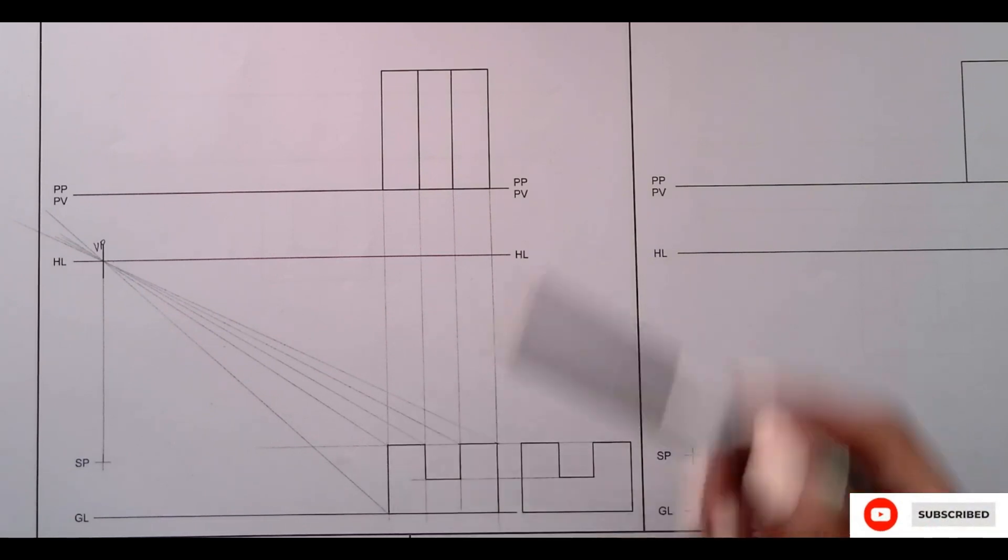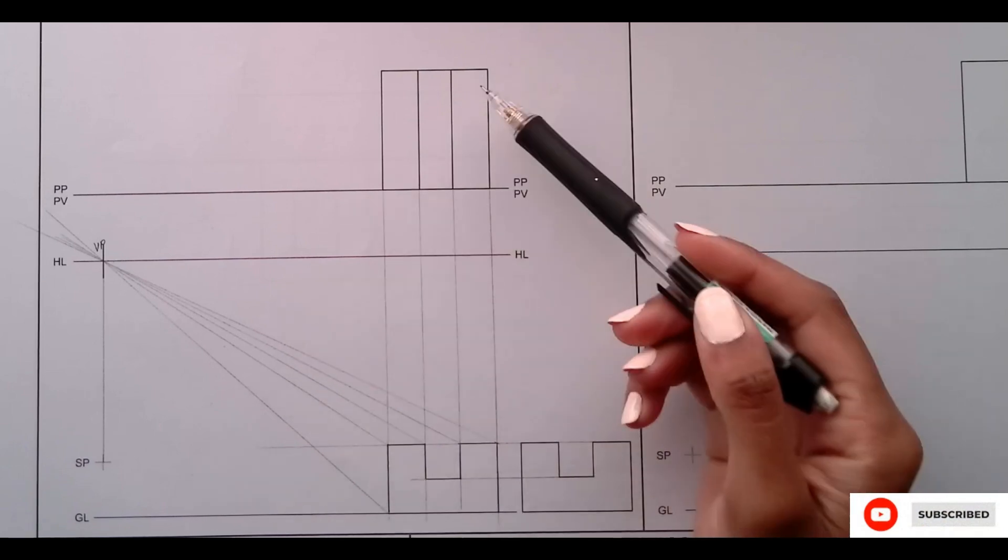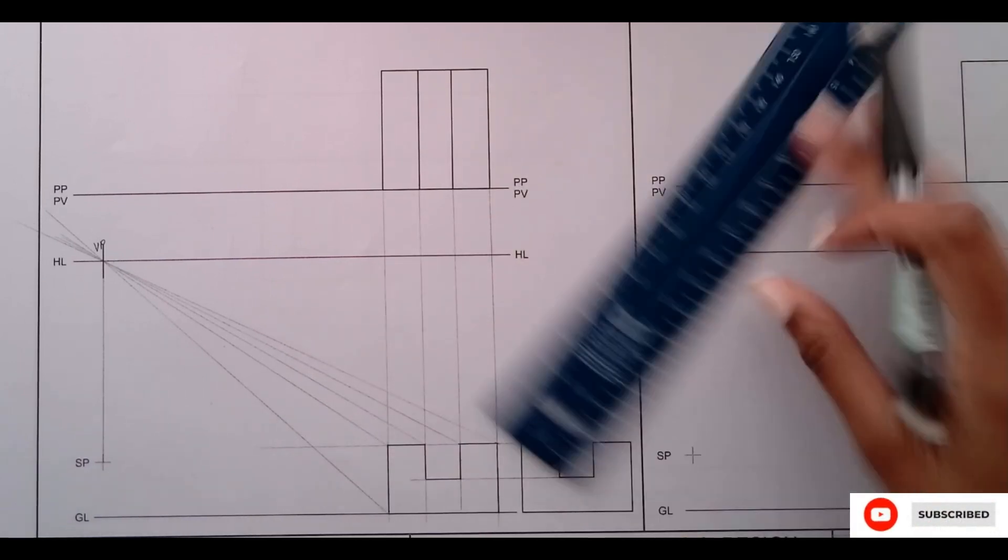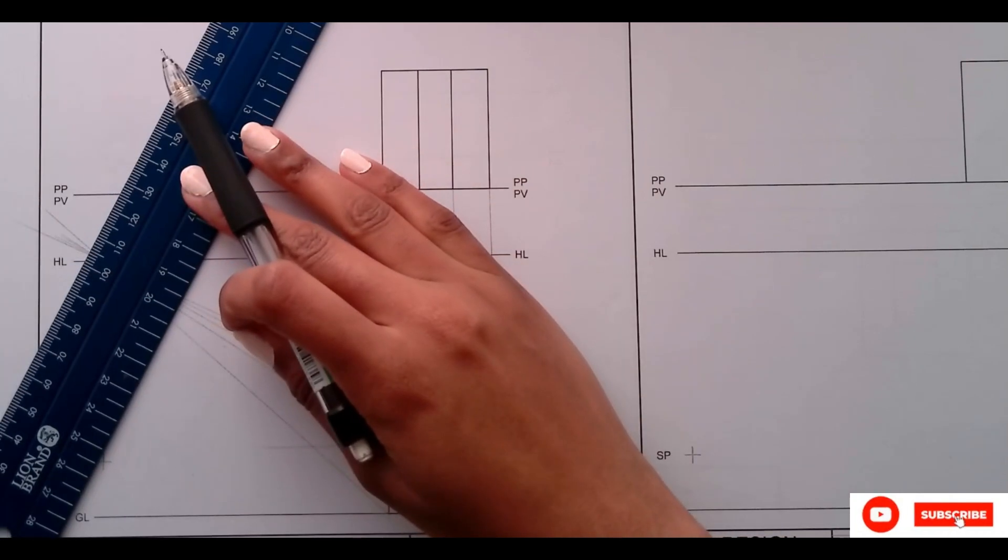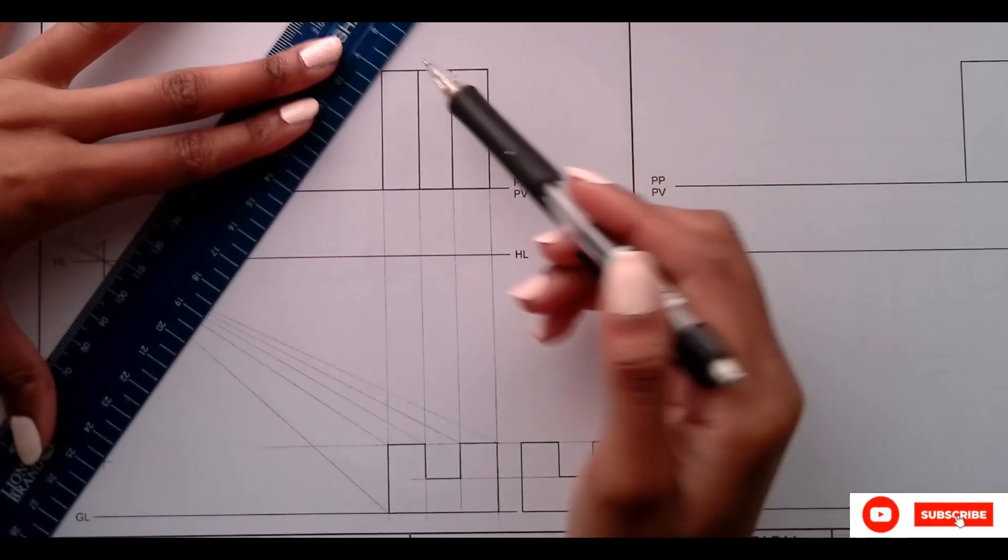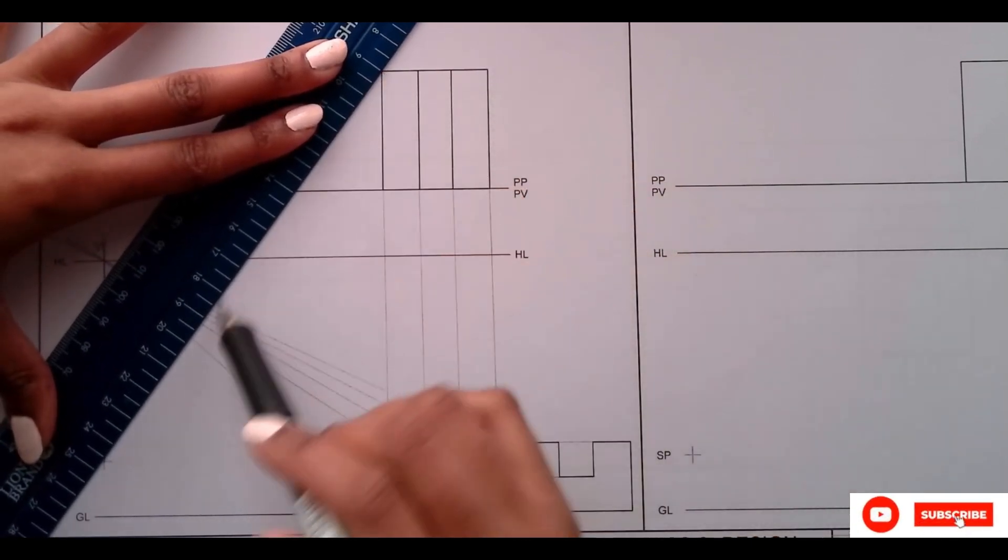Now to close off the shape, I'm going to bring the back points down. So you first align them with the SP, then bring them down. So I'm just going to do that with one point. I'm only going to draw one point all the way, then the rest I'll just align.